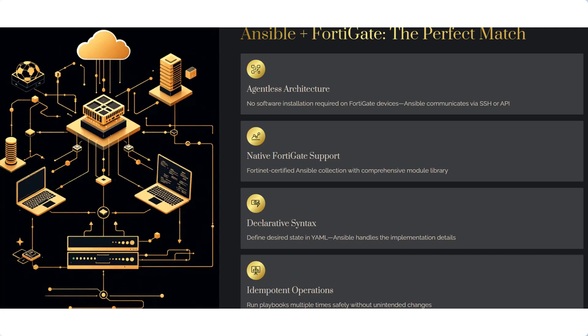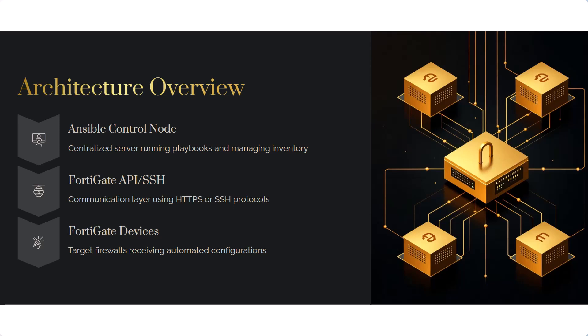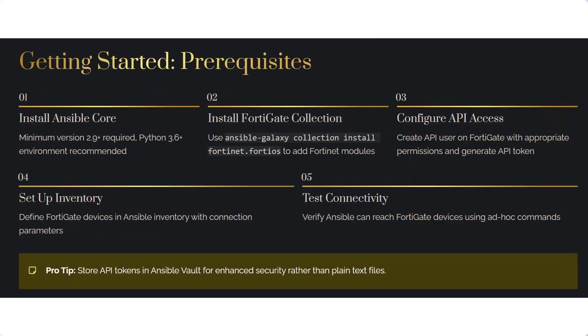For a brief architectural overview: Ansible runs on our control node, connecting to FortiGate over HTTPS or SSH. The FortiGate receives configurations directly from our playbook, meaning no more tedious manual logins or inconsistencies.